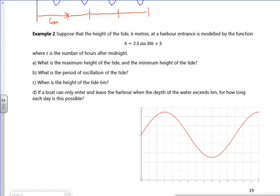So we've got the height of the tide at a harbour entrance modelled with that function. So from that, things we know, we know that the centre line is 5 metres above the ground.